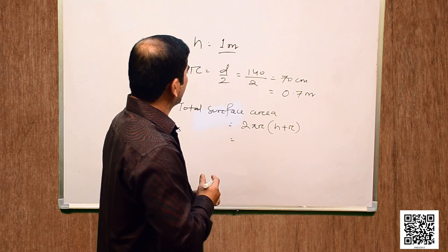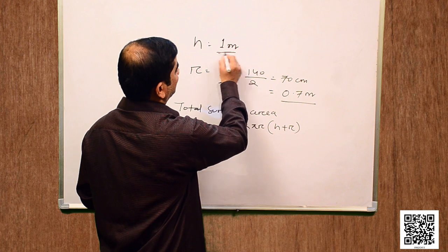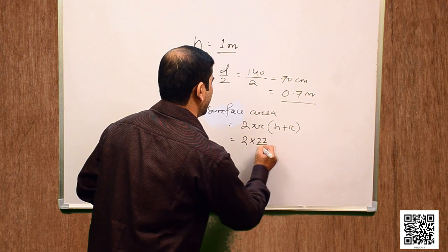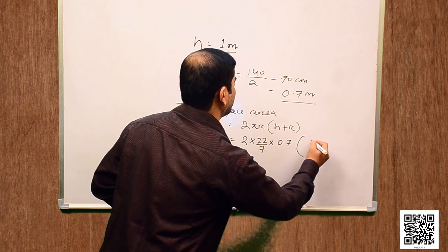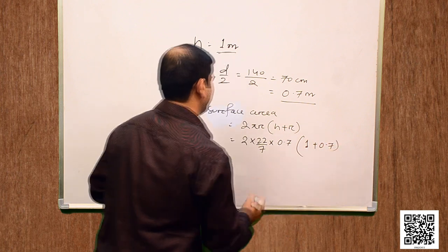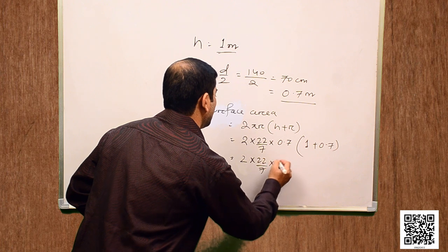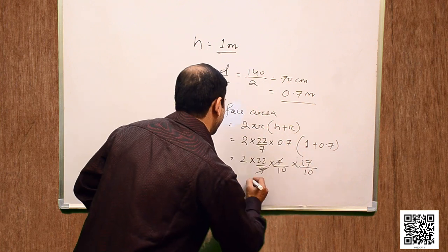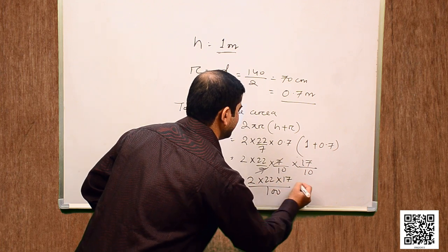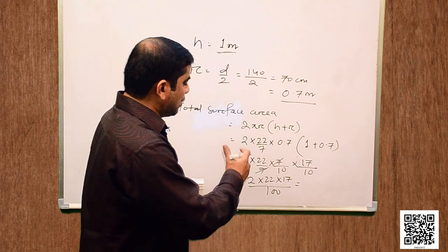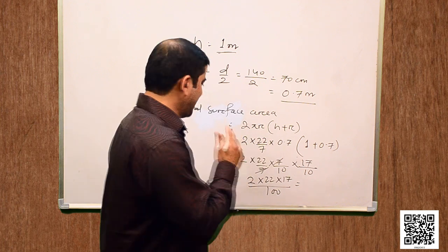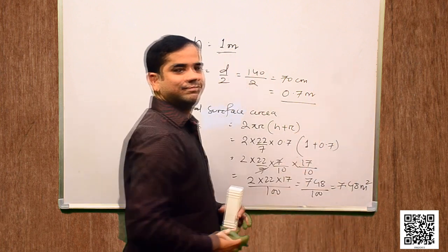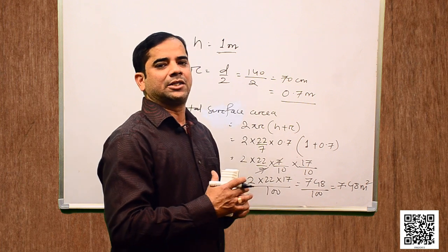We have r as 0.7 meter, h as 1 meter, and pi as 22 by 7. Substituting: 2 into 22 by 7 into 0.7 multiplied by (1 plus 0.7), which gives 2 into 22 by 7 into 7 by 10 into 17 by 10, that is 2 into 22 into 17 divided by 100. For the tank we require 7.48 square meters of sheet.